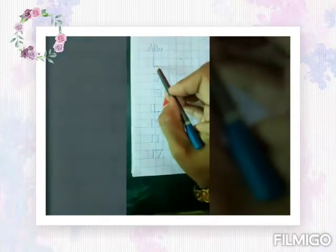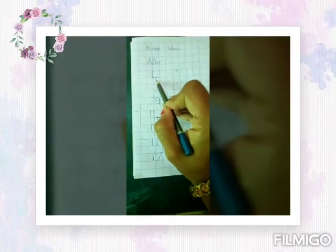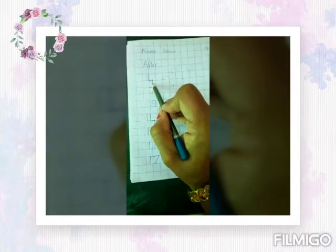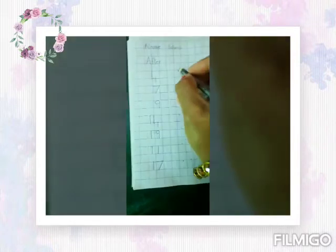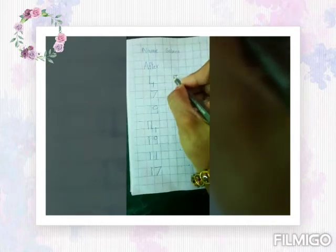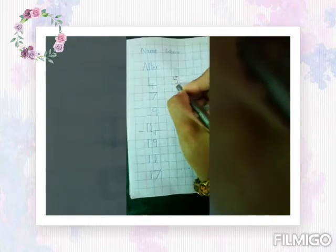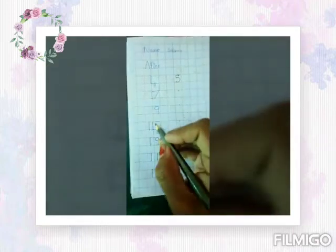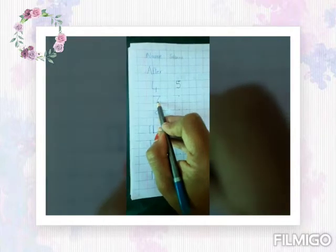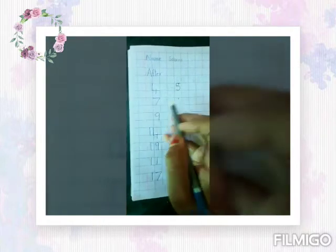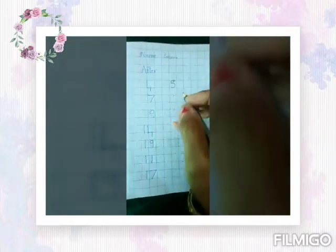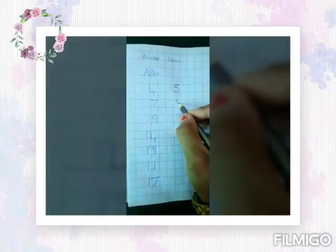What number is this? Number 4. What comes after number 4? Then you have to write here number 5. Now children, what number is this? Number 7. Now what comes after number 7? 8.